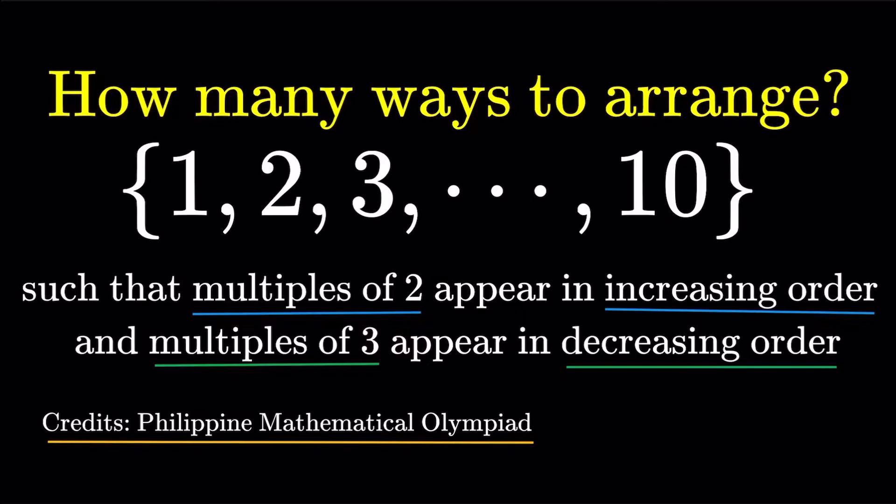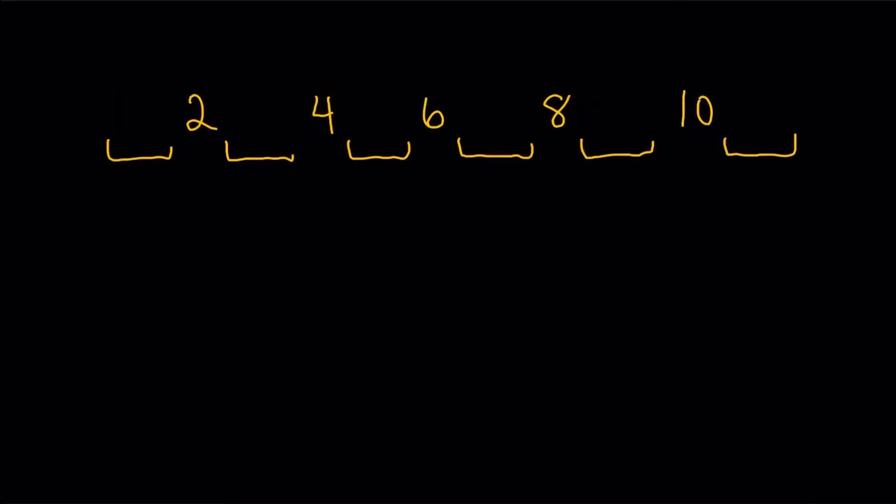So let's just talk about the numbers that are kind of restricted here. Multiples of 2 appear in increasing order. Let's try to do that first. Obviously, it should be 2, 4, 6, 8, 10 from left to right with numbers in between, obviously, or in the front or in the back.